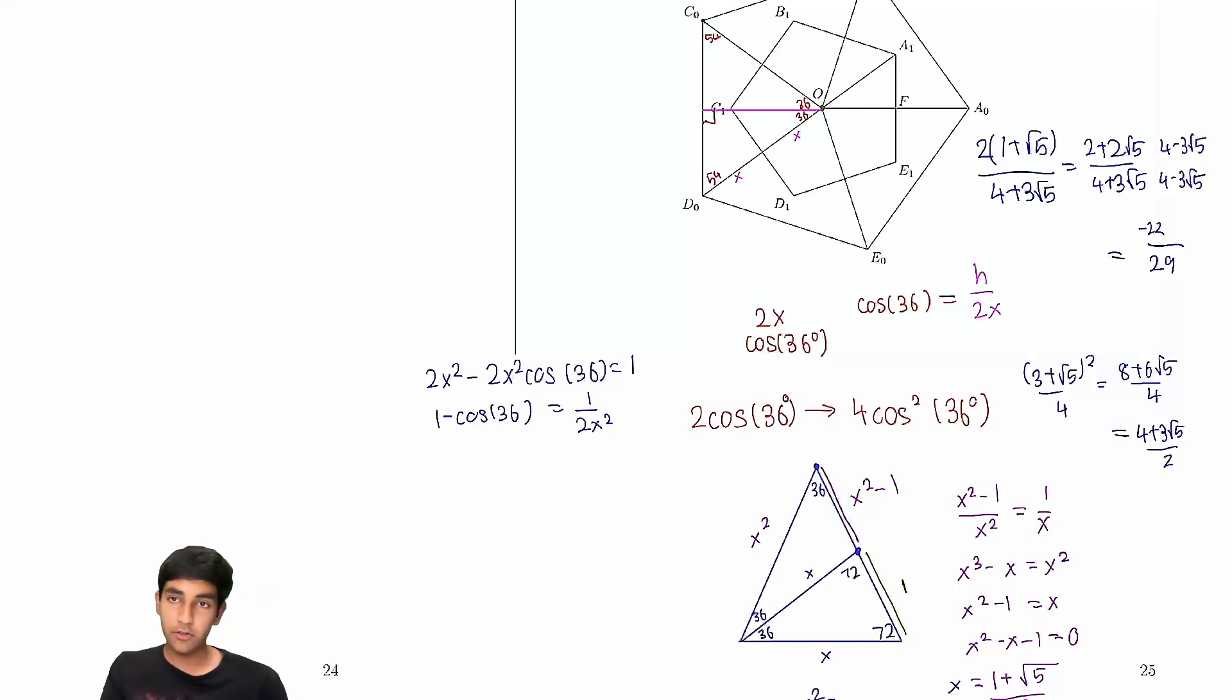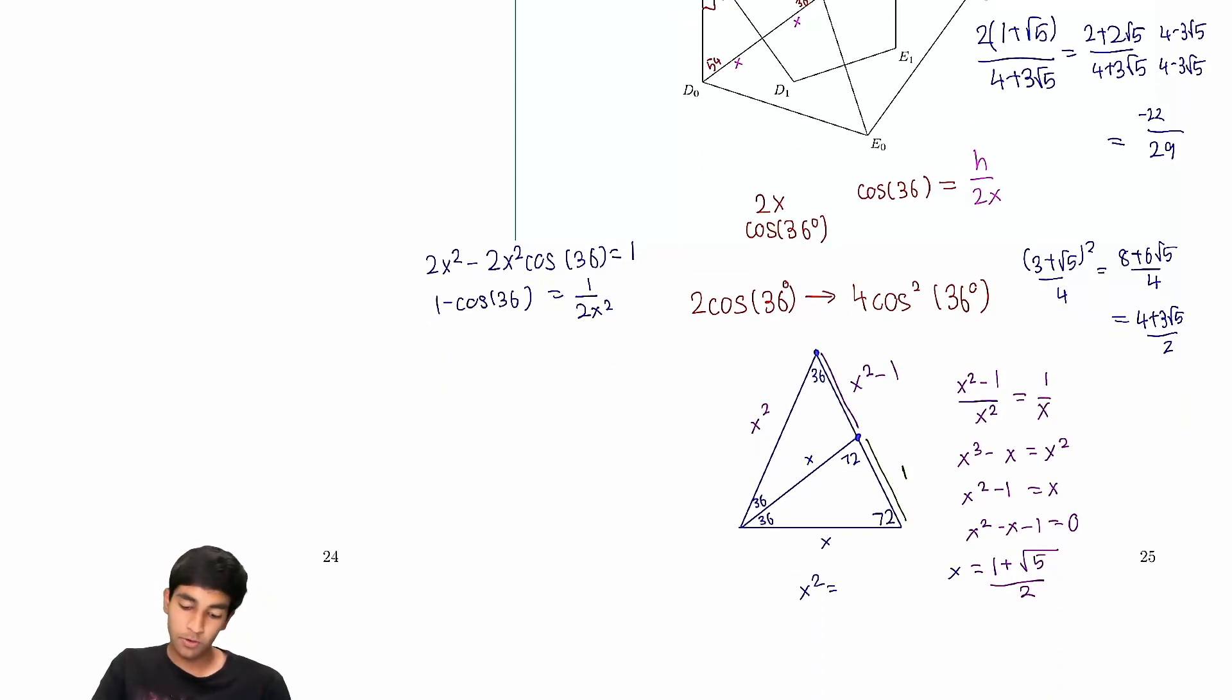6 plus 2√5. Because 1 squared and √5 squared, and then we have 2√5 by 4, which is just 3 plus √5 by 2. So this is just 1 over 3 plus √5. So we rationalize. We get 3 minus √5 over 3 squared minus 5, so 4.